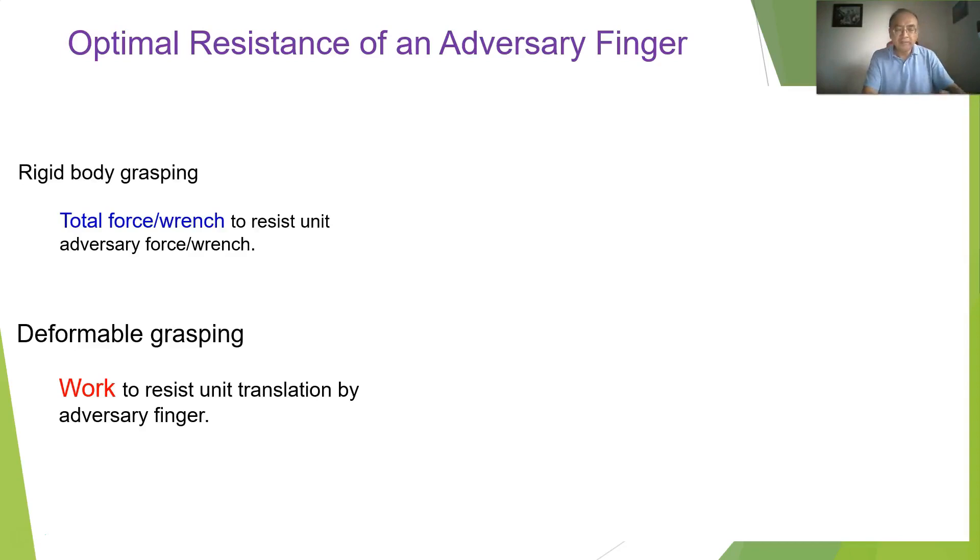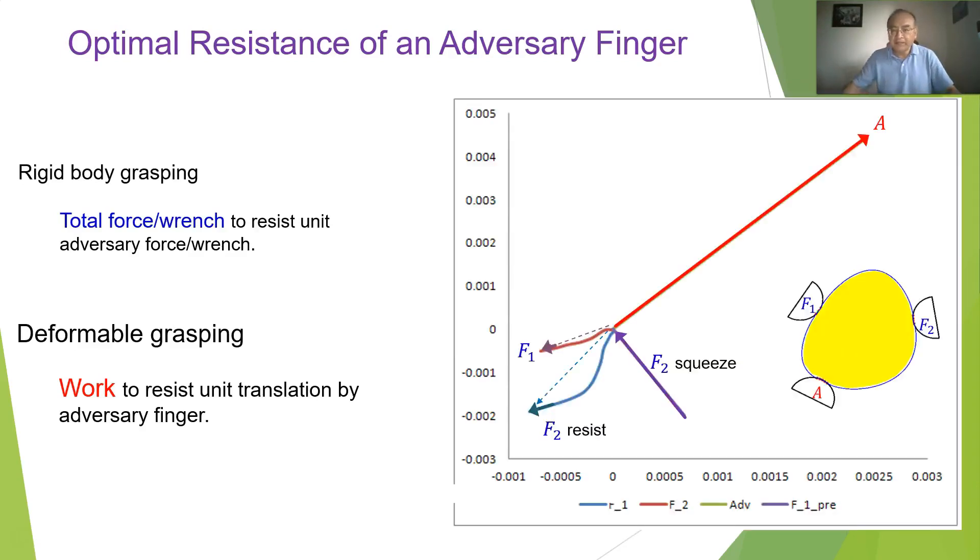And then the torque is changing and the force is changing as well. So we introduced the notion of a metric that uses work to resist a unit translation by adversary finger. Here is a simple example. So this is the object and initially it's grasped by two fingers F1 and F2. This grasp is achieved by a squeeze from F2 under this translation. Once the grasp is achieved by F1 and F2, now we add a third finger which is the adversary finger A and it's determined to move in that direction given by this red arrow to break the grasp. To resist that grasp, the optimal trajectory computed by our programmer algorithm says that F1 should move along this curve. So basically F1 backs up a little bit while F2 pushes forward to resist this adversary finger.